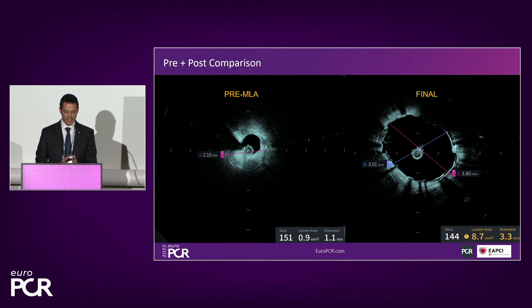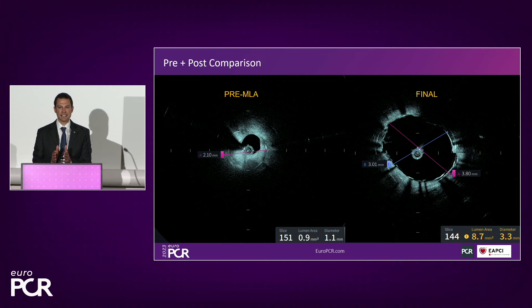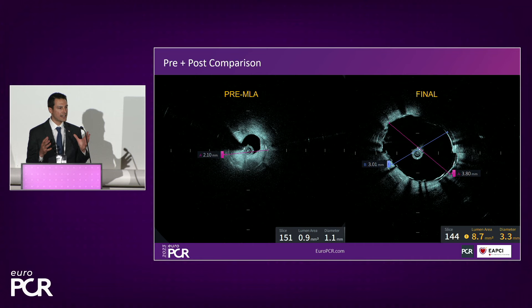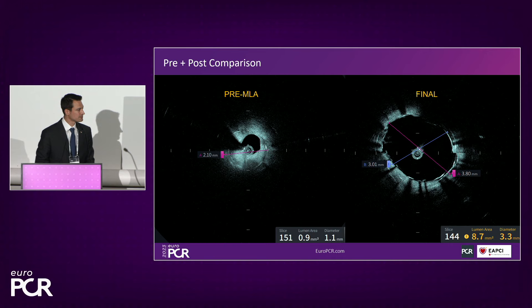To highlight the pre-versus-post comparison: pre-PCI, the minimum lumen area was just 0.9 mm² with a stent diameter of 2.1 mm. On the co-registered post-PCI cross-section, we now have a minimal lumen diameter of 3.0 mm with an area of 8.7 mm². The larger that final lumen area, the less likely the patient is to return with a stent-related event.